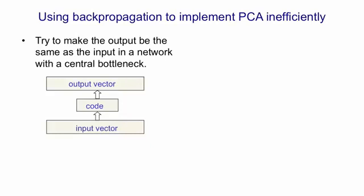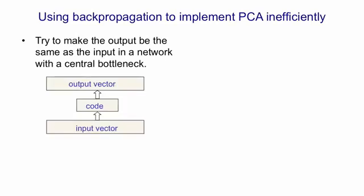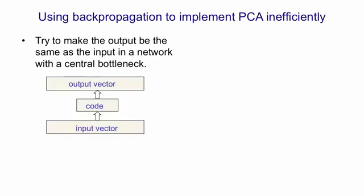And those are going to correspond to the principal components or something like them. So it looks like this. We have an input vector. We project that onto a code vector. And from the code vector, we construct an output vector. And the aim is to make the output vector as similar as possible to the input vector.